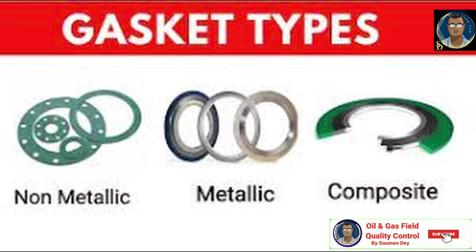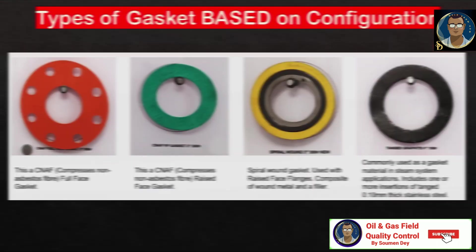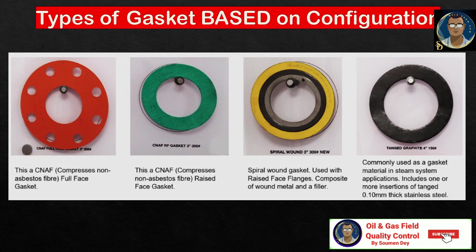Types of gaskets by material: non-metallic, metallic, and composite. Gaskets can also be differentiated by their configuration: full face, IBC (inner bolt circle), and ring type joint or RTJ.